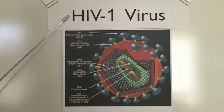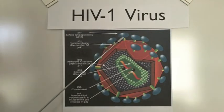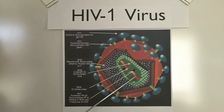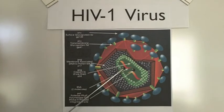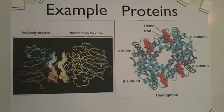HIV is a retrovirus. Shown here are the envelope proteins. These bind to the host cell. Shown here are the RNA strands. And here's the reverse transcriptase, which transcribes a viral RNA template to DNA. Proteins are the main agents of biological function.